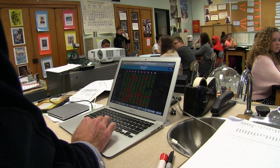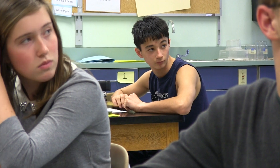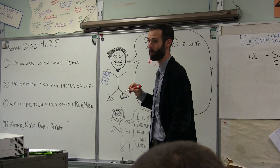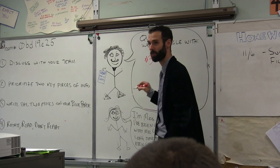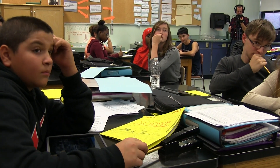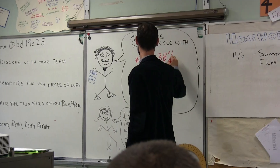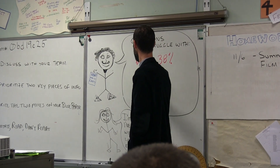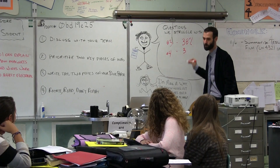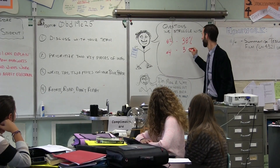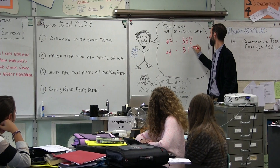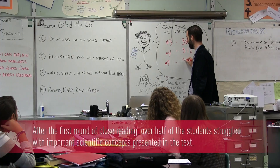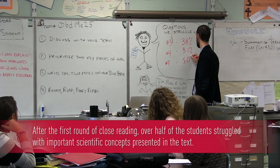So this is really interesting. My side of the app tells me which questions you struggled with the most. Question number three, which was about the difference between volts and amps, only 38% of people got it right. Question number four, only 31% of people got it right. Question seven, only 50% of people got it right.